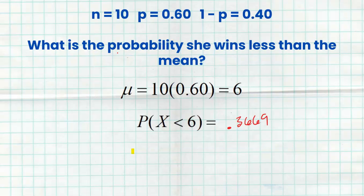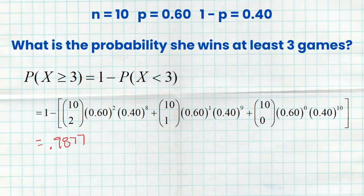The binomCDF and binomPDF are awesome ways to get answers quickly, but please — on an FRQ question, if you have to show your work, you've got to show your work like I did. You can use the calculator to get your answer quickly, but you've got to show your work. Hopefully that's a quick review video so you can understand how to utilize the binomial distribution and use your calculator to get some answers pretty quickly.